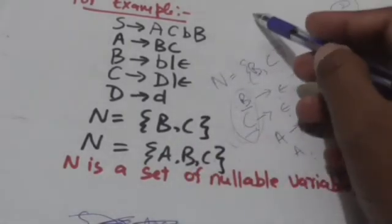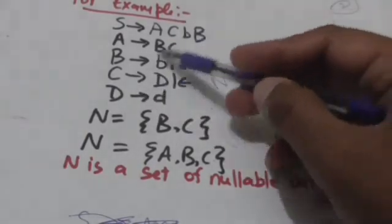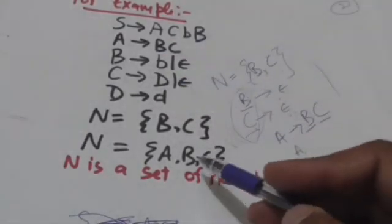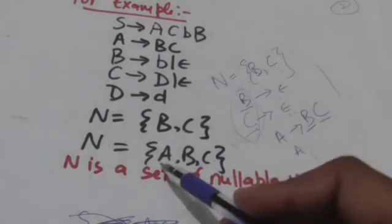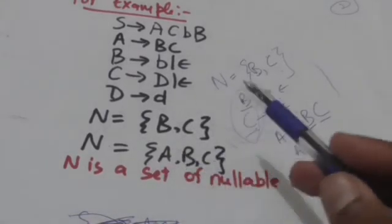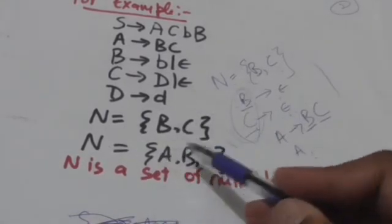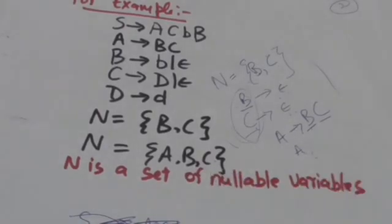So the grammar G has three nullable variables: A, B, and C. Thank you very much.